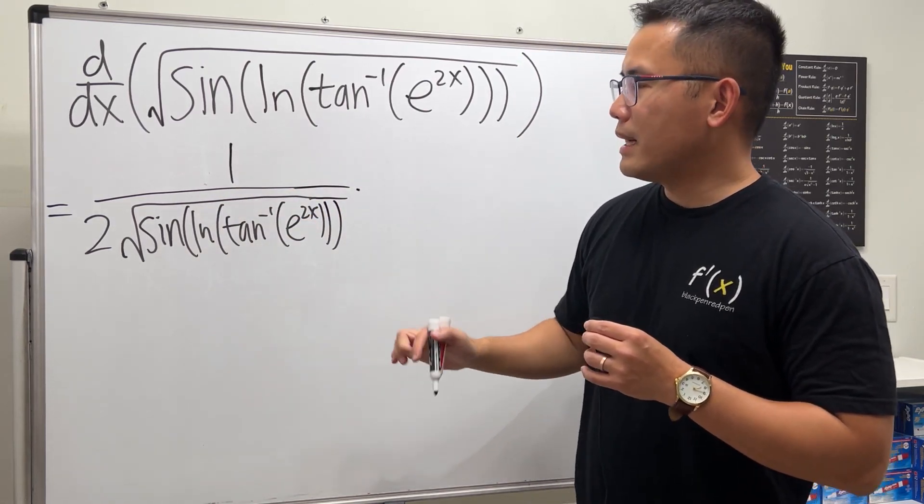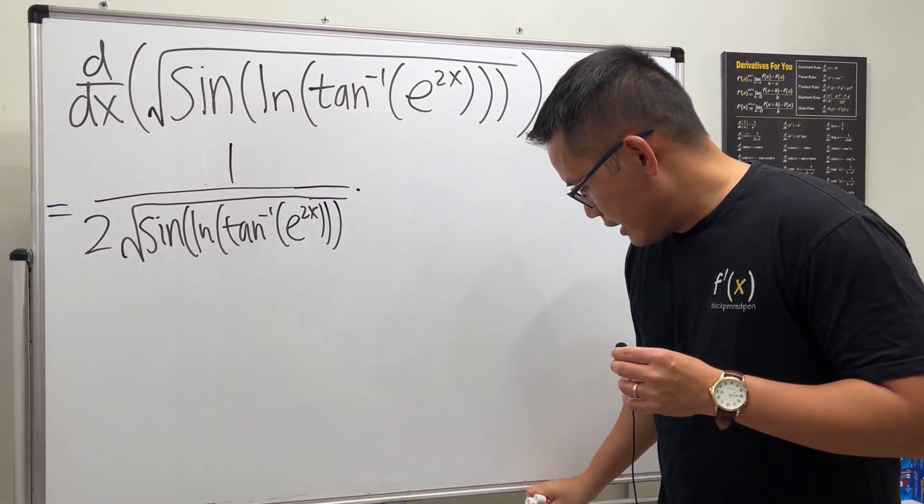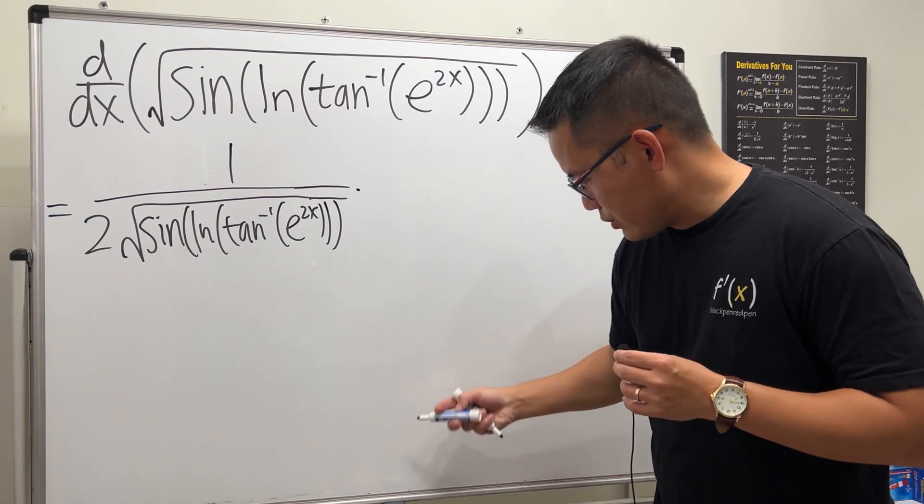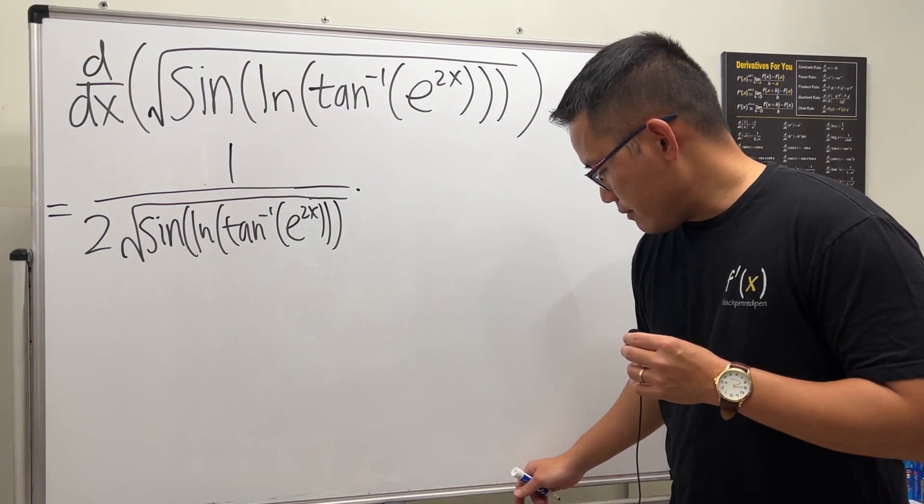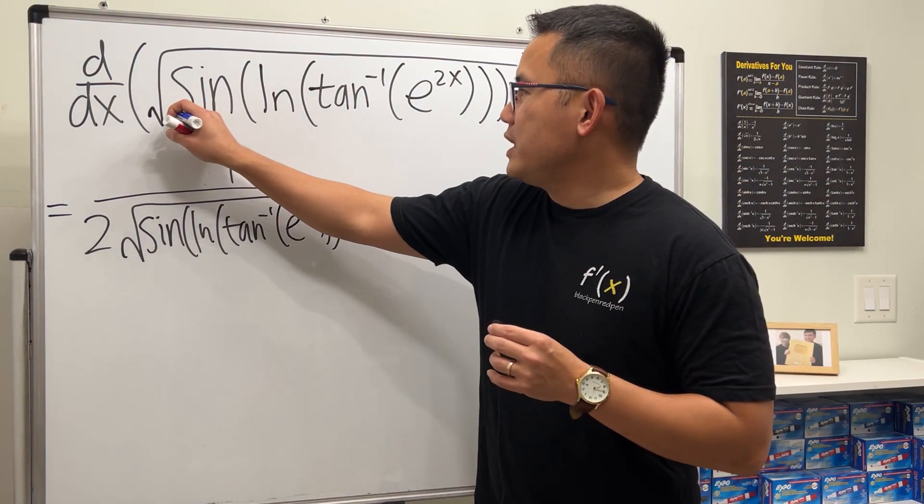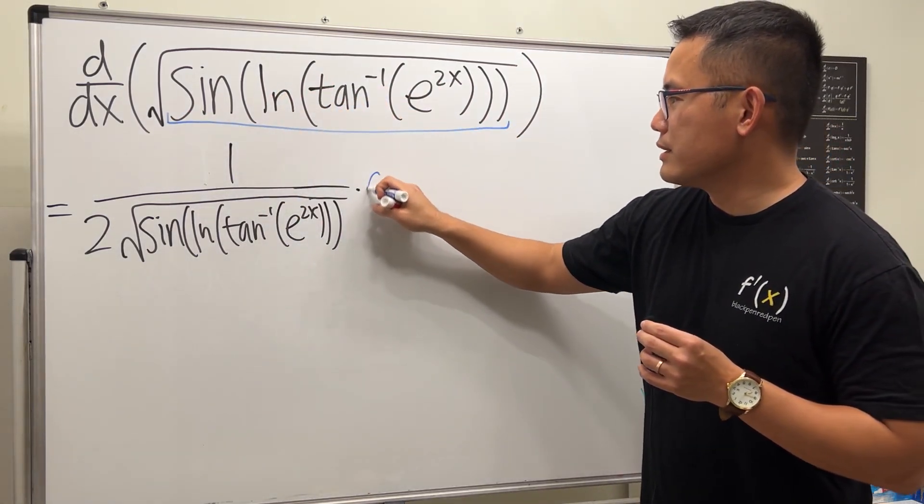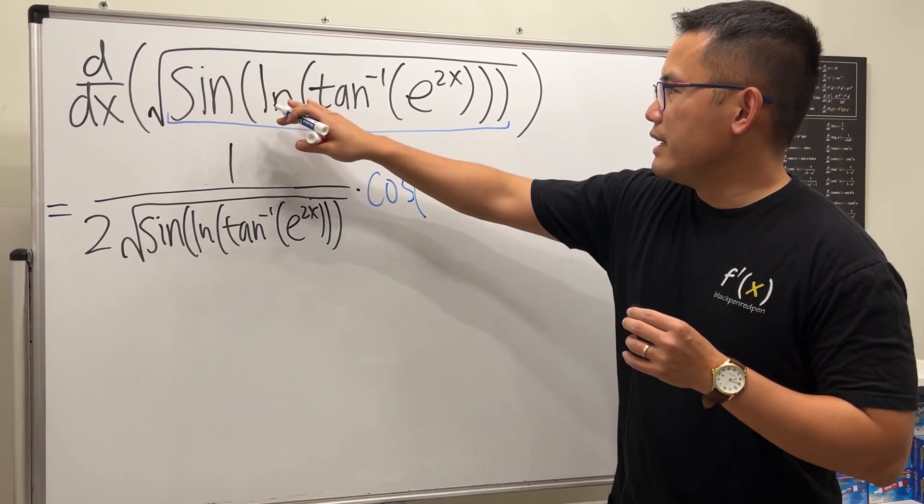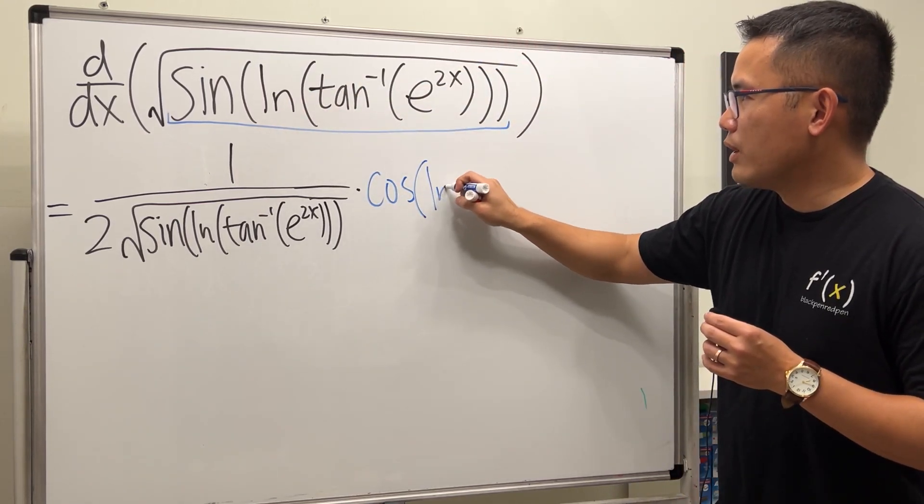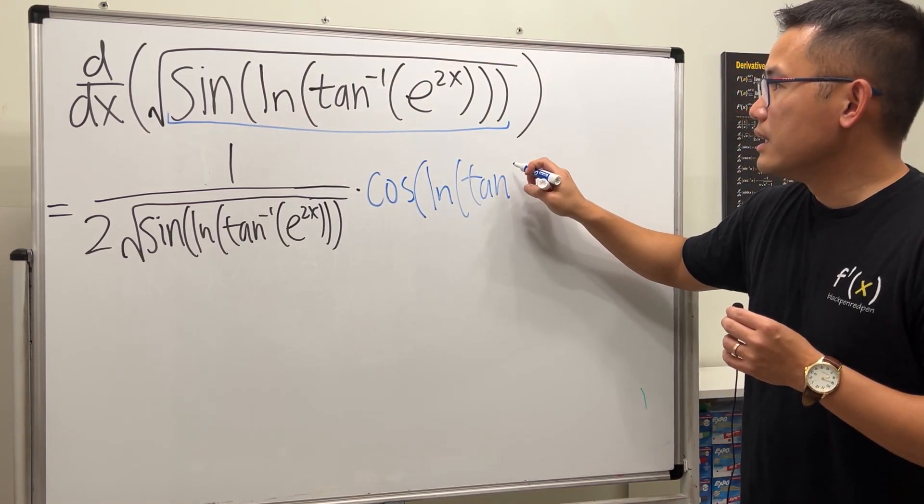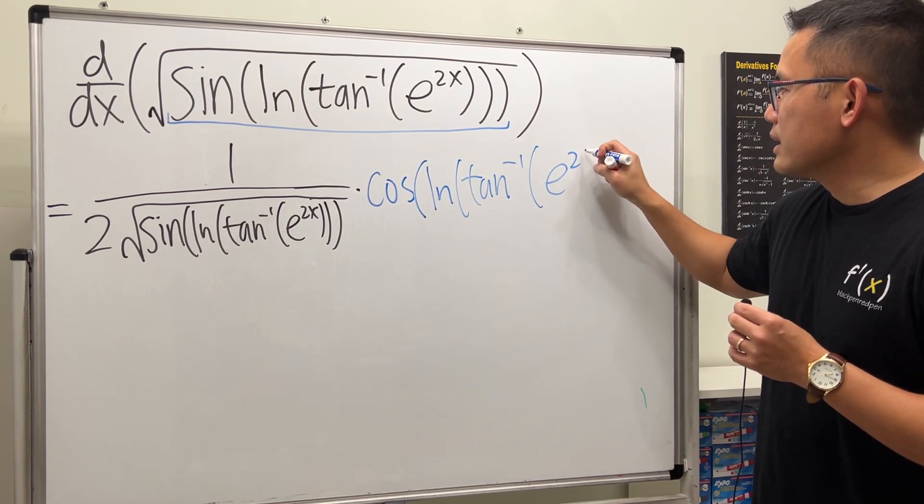And then we are going to multiply by the derivative inside. Let me use the blue one to continue. The derivative of this sine of whatever is cosine of whatever, right? So it's cosine of... And then you just write down the inside over again. So ln of inverse tangent of e to the 2x. Like so.